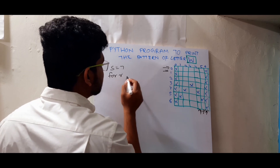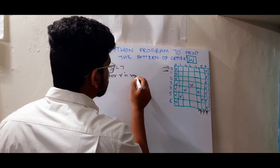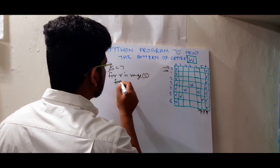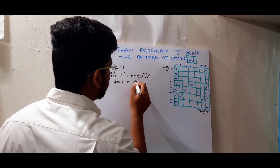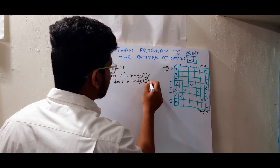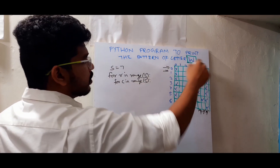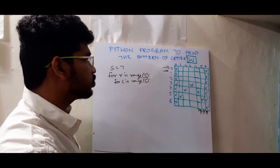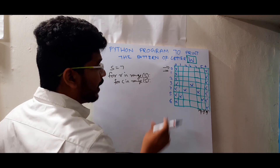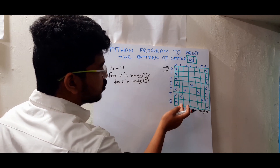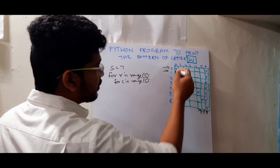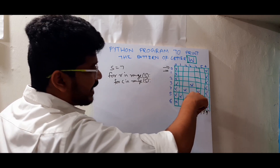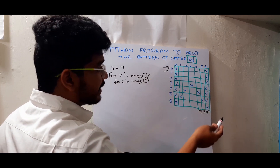For R, meaning rows, in range of S — that is the size. For columns C in range of S. R for rows, C for columns. So first we need to loop through rows and columns, and then find the conditions where we print spaces and where we print stars. We will write conditions for printing stars first.